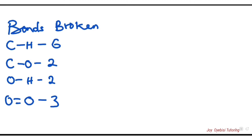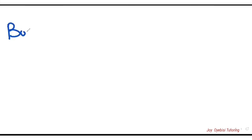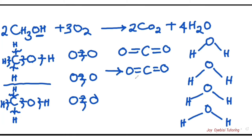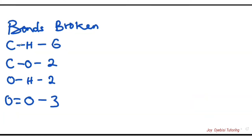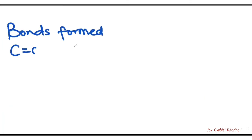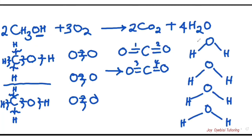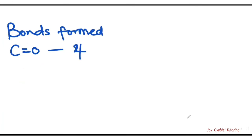The next step is to count bonds formed on the product side. We have C=O (carbon double bonded to oxygen): one, two, three, four — so four C=O bonds formed. And oxygen to hydrogen (O–H): one, two, three, four, five, six, seven, eight — so eight O–H bonds formed.